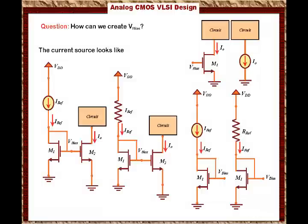We call this circuit the current mirror. Why do we call it the current mirror? Because these two transistors are a reflection of each other — they are almost like the mirror image of each other. Basically, I_out is the mirror image of IREF, and note that the voltage VGS1 is the same as VGS2.